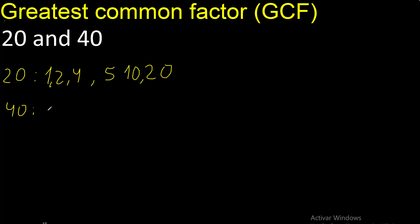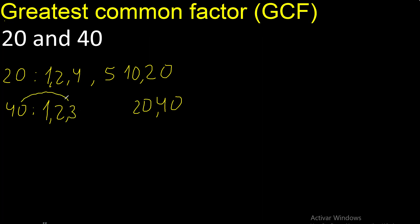Factors — always start with 1. 40 divided by 1 is 40. Next, divided by 2 is 20. Next, 40 cannot be divided by 3. Next, divided by 4 is 10. Divided by 5 is 8. Next, 40 cannot be divided by 6, cannot be divided by 7. Next — 8 is here.